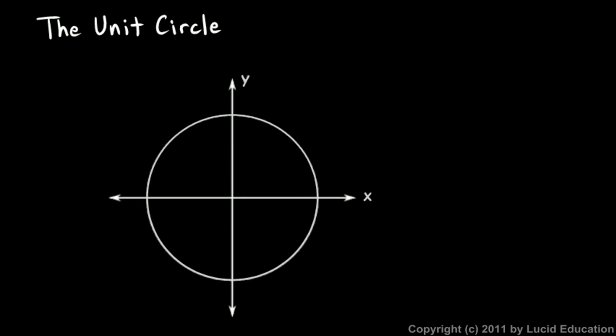Now we will talk about the unit circle. I'll explain what this is and make some important points about it, and then we'll talk about the trigonometric functions and how they relate to and arise from a unit circle. The term 'unit circle' just refers to a circle centered at the origin with a radius of 1.